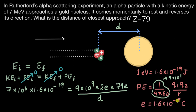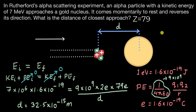Carrying out the calculation, the value of D you should get is 32.5 × 10⁻¹⁵ meters. At the scale of a nucleus, the units we often use are femtometers, where one femtometer equals 10⁻¹⁵ meters. So we can express this as 32.5 femtometers.